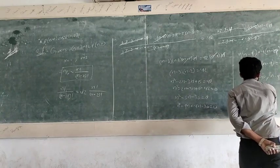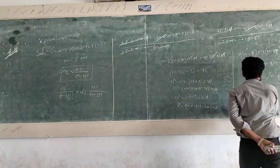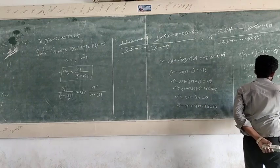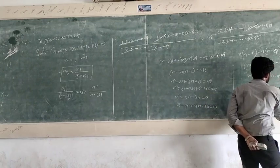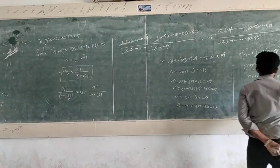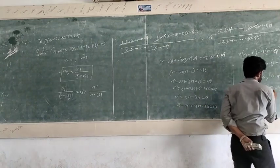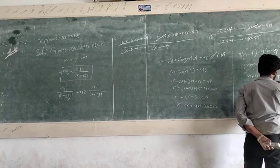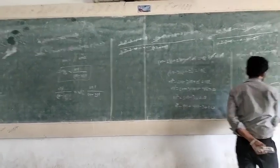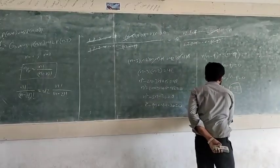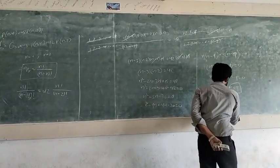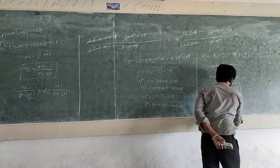Therefore n = −4 or n = 9. Since n must be a positive value, we take the positive result. Therefore, n = 9.